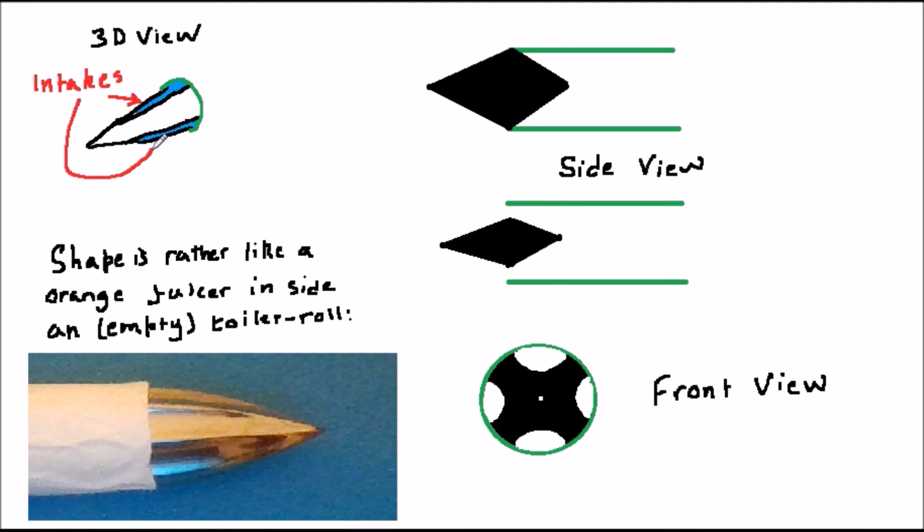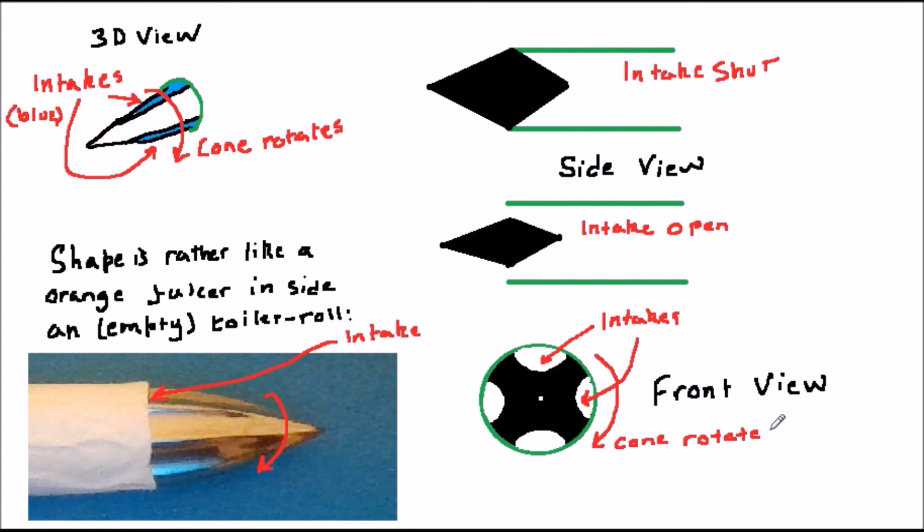One way of switching the flow like this is with a rotating sculpted nose cone. In this case, the cone has a series of standard scram intakes around its perimeter and as it rotates, these sequentially first shut off the flow and then allow it in, so providing the required effect.